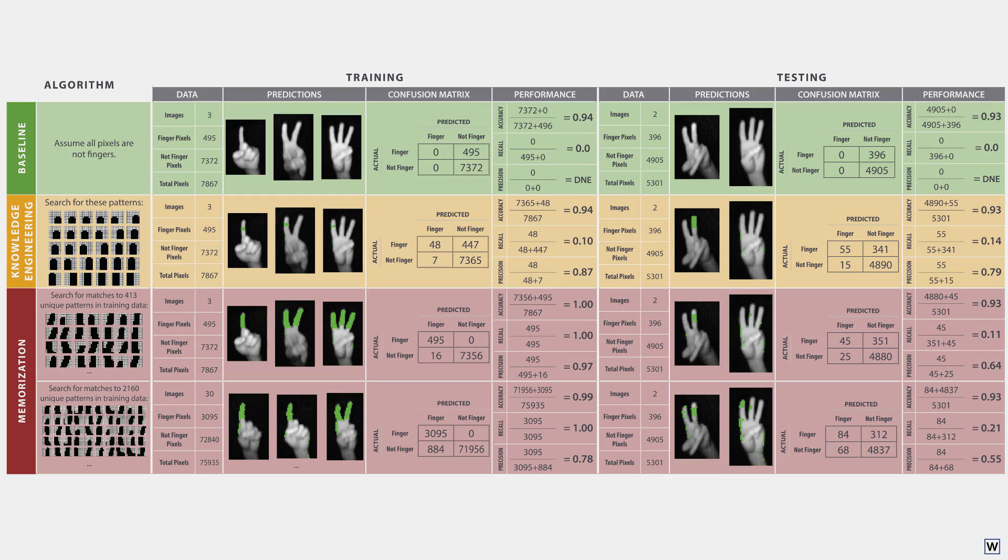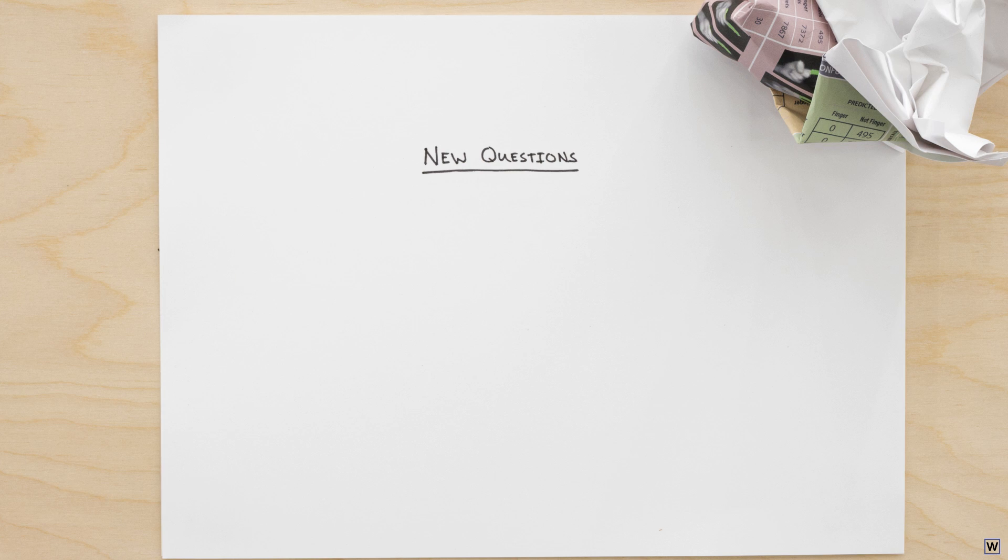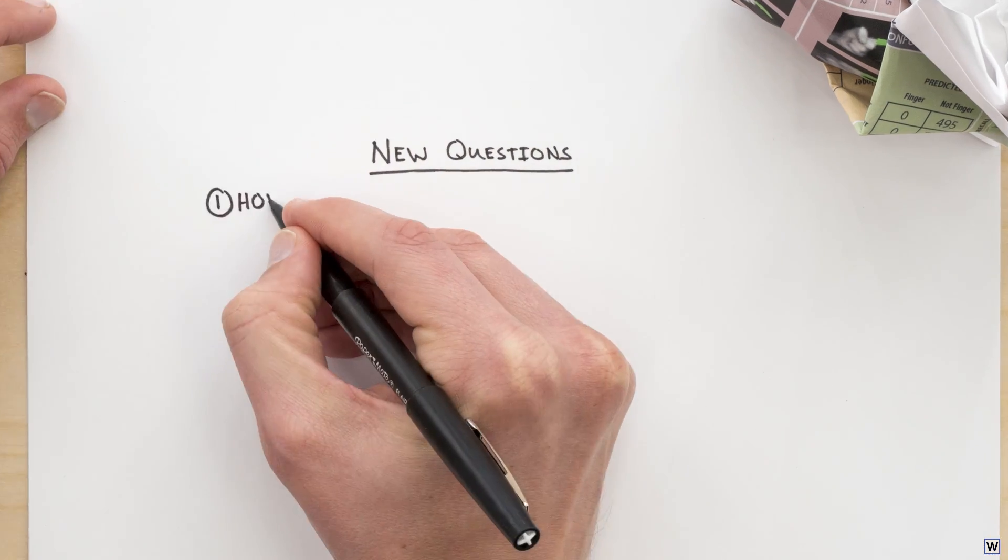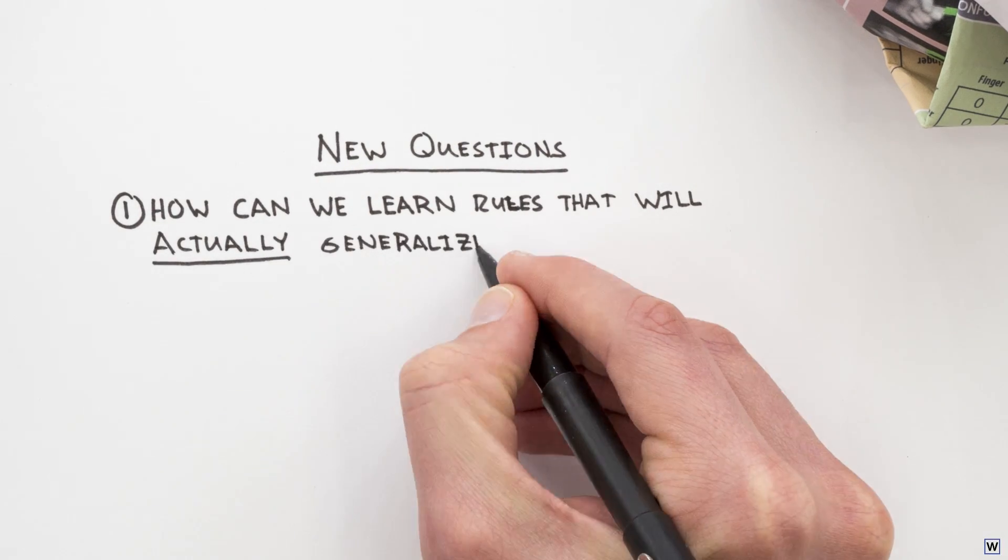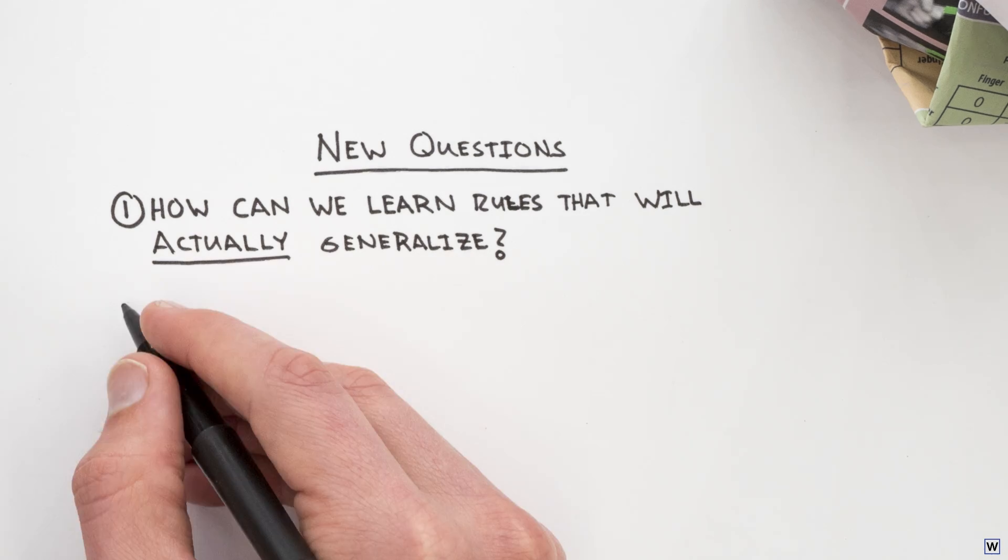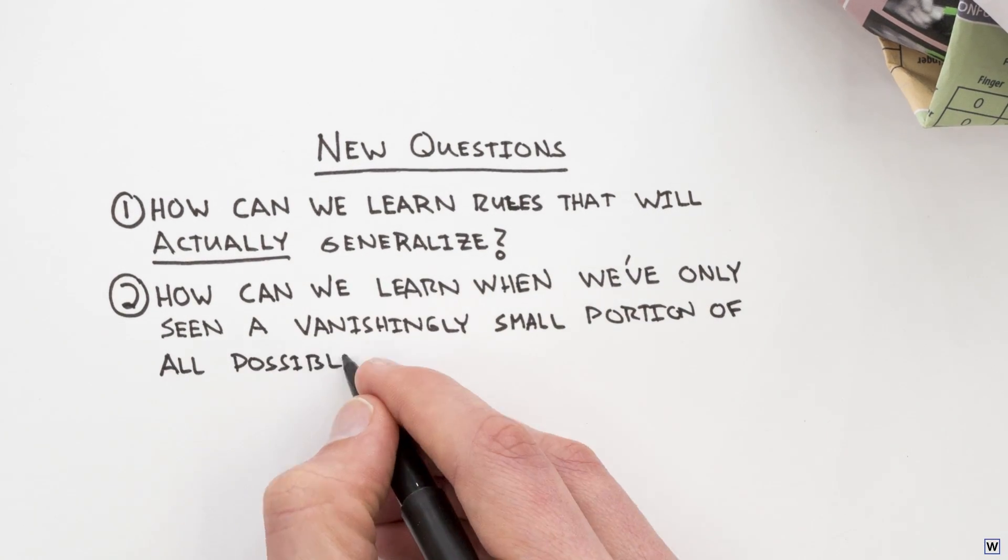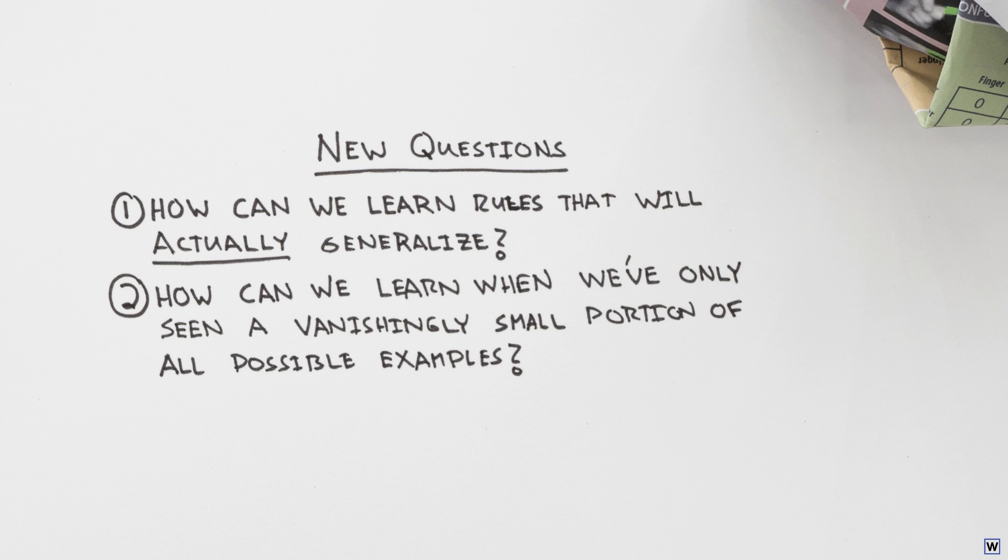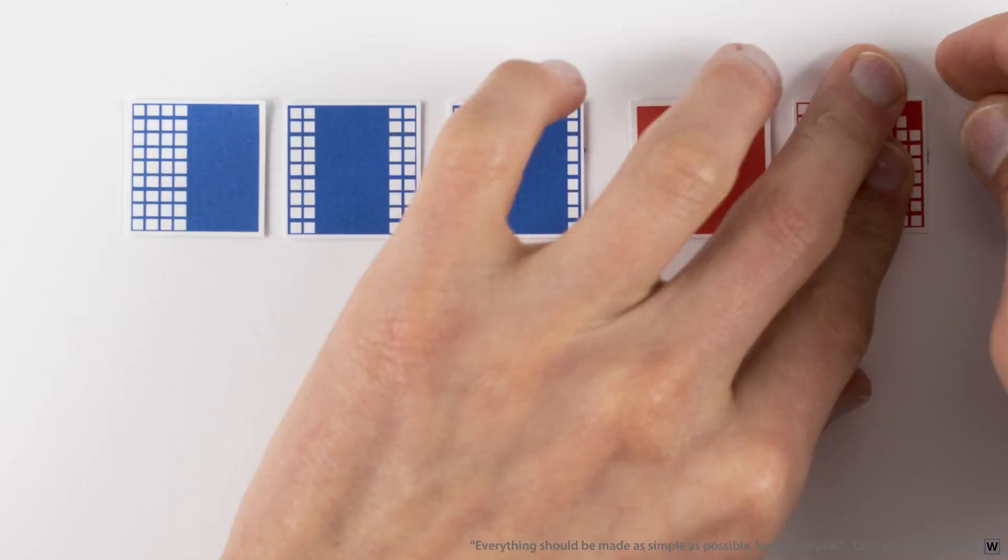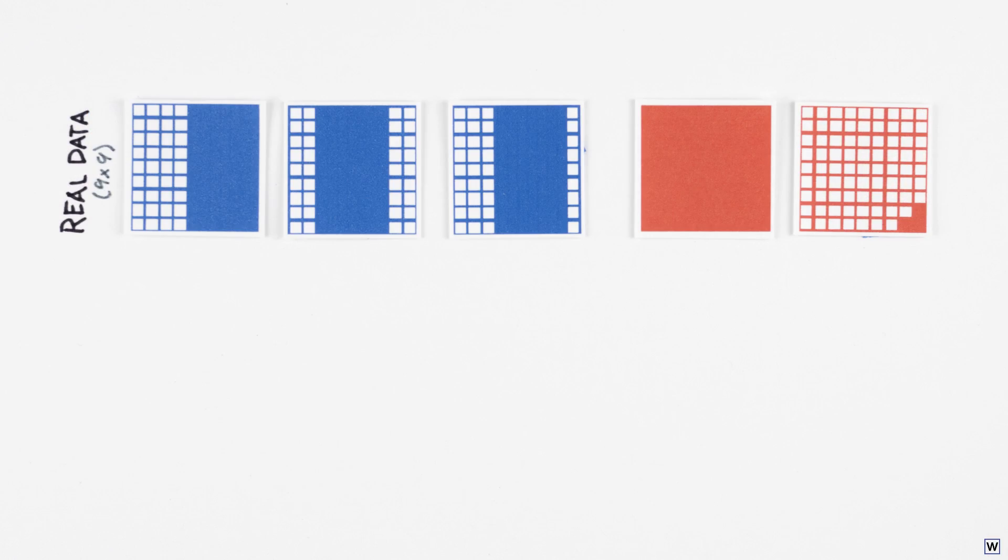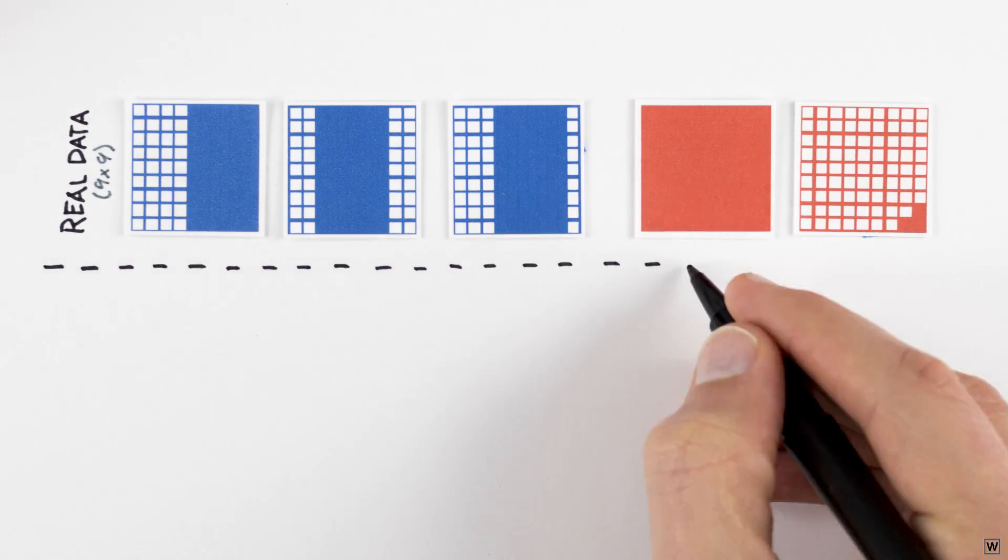If we're going to program computers to actually learn from data, we must address some tough questions. How can we learn rules that will actually generalize? How can we learn when we've only seen a vanishingly small portion of all possible examples? To answer these questions, let's simplify our problem one last time. Instead of trying to learn rules from 9x9 examples, let's first consider 2x2 toy data.